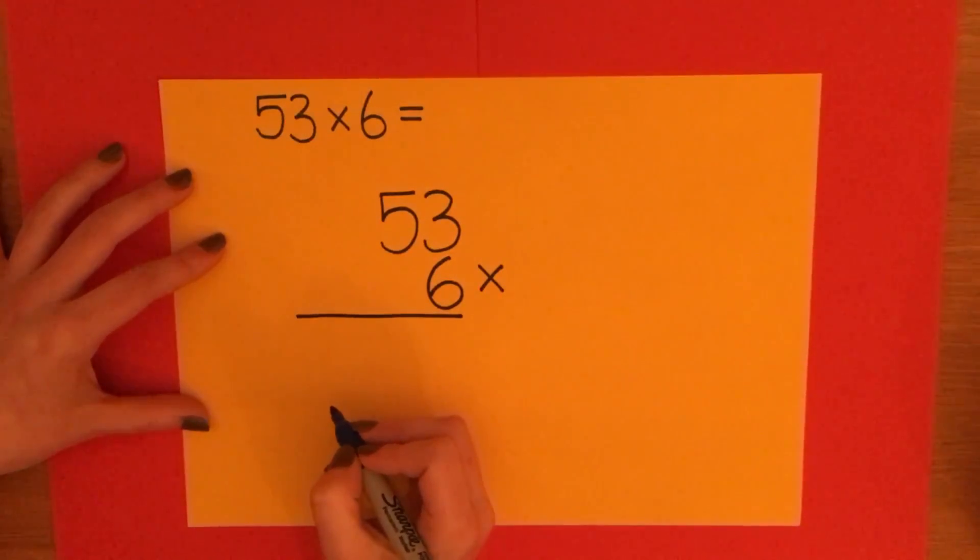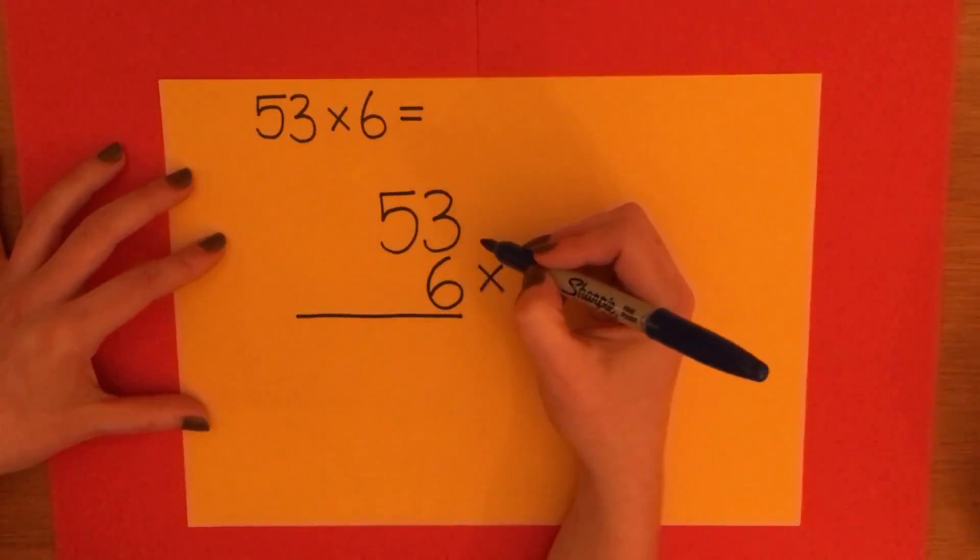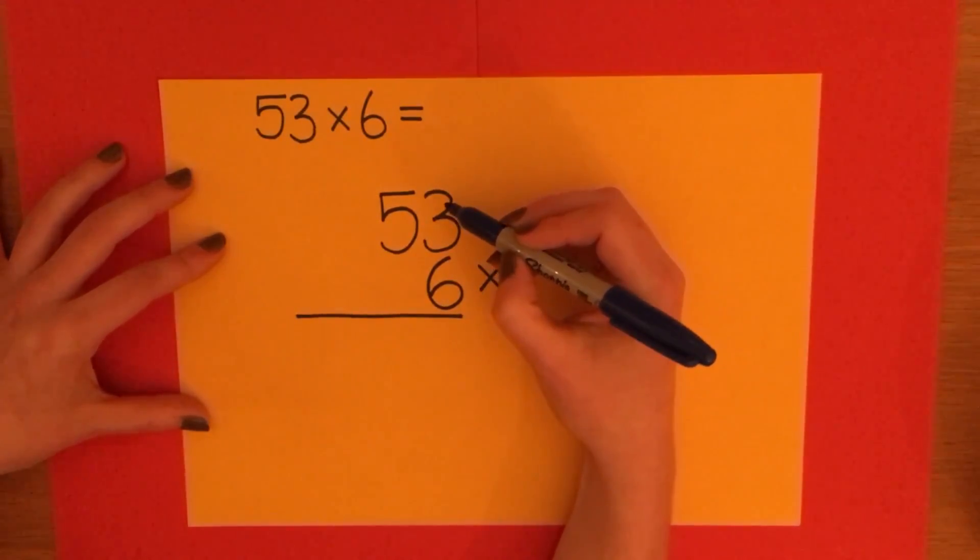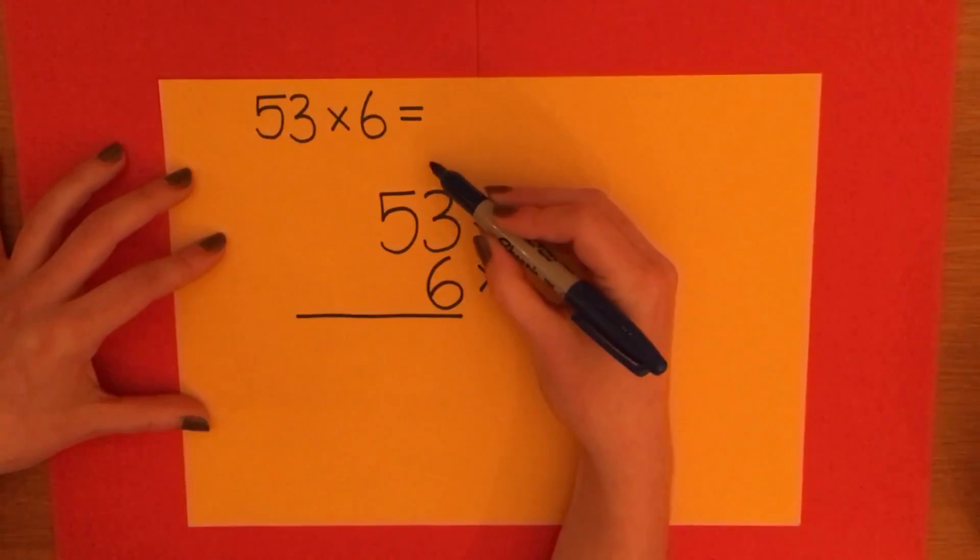So to start off with short multiplication, you always start in the far right column. And for us today, that's the units.